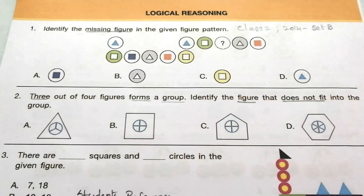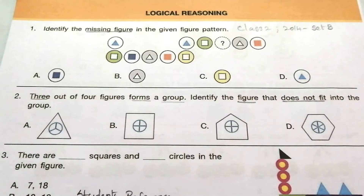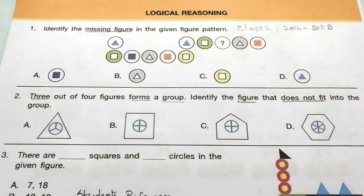Hi, dear students, welcome to Students Reference. If you are new to this channel, please subscribe and click the bell icon to get notifications for upcoming videos. Today we are going to discuss the 2014 Set B NSO question paper for Class 2 students. I have already uploaded some other IEO, NSO, IMO, and IGKO question papers for Class 2 students — go to the playlist and click Olympiad Class 2. Before discussing this paper, I will show you the full question paper; try it on your own. I will attach the answer key at the end of this video for your reference.